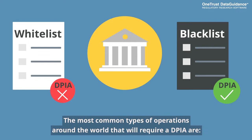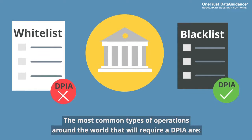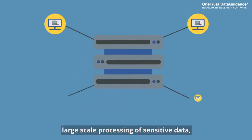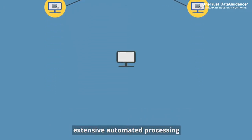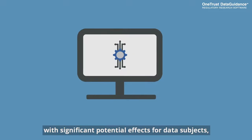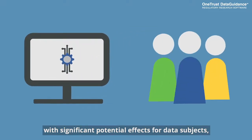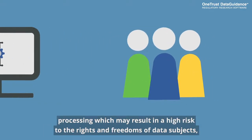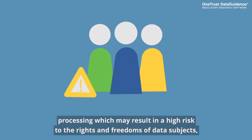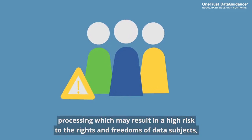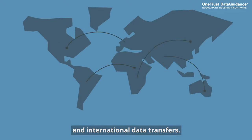The most common types of operations around the world that will require a DPIA are large-scale processing of sensitive data, extensive automated processing with significant potential effects for data subjects, processing which may result in a high risk to the rights and freedoms of data subjects, and international data transfers.